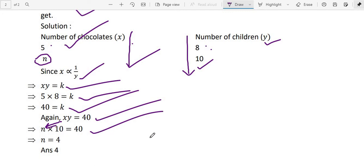So 10N is 40. So divide both sides by 10. 10N equal to 40. So this side also divide by 10, then this side also divide by 10. This 10 and 10 cancel, then 10 into 4 is 40.